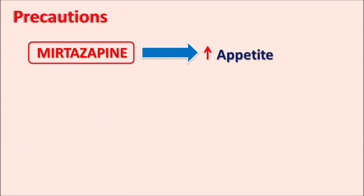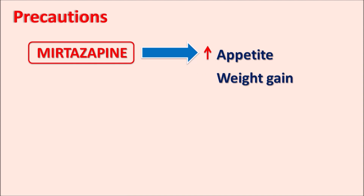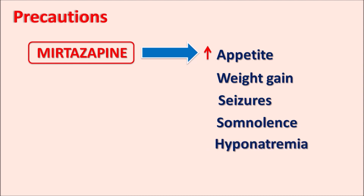Mirtazapine can also increase appetite, resulting in weight gain — this may be attributed to its action on 5-HT receptors. Similarly, this drug can precipitate seizures and increase somnolence (sleepiness), which may be due to blockade of H1 receptors. Hyponatremia — decreased sodium levels — can also be observed. These precautions should be considered before this drug is prescribed to treat depressive symptoms.